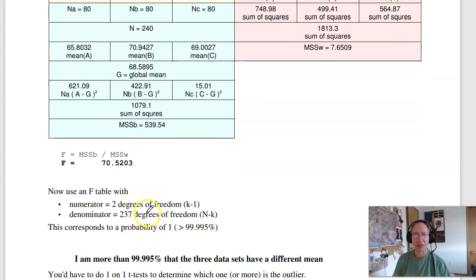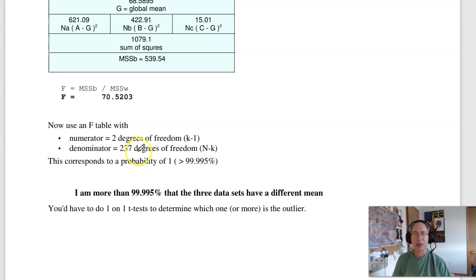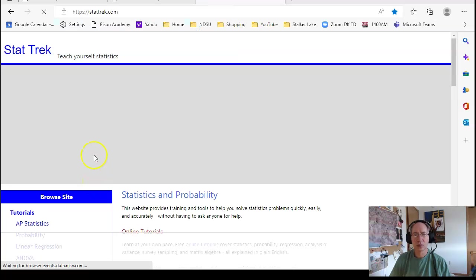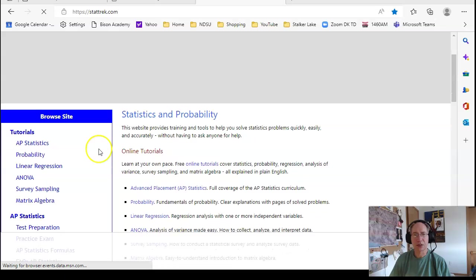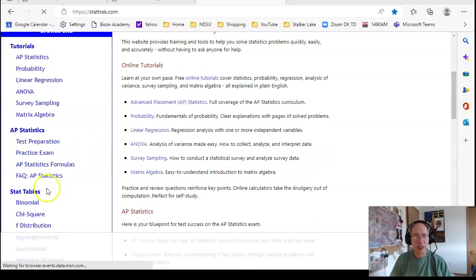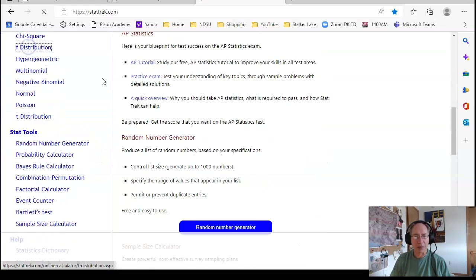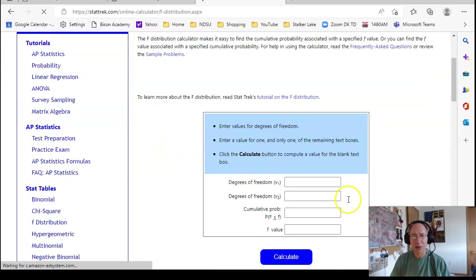Now I go to StatTrack. In StatTrack, I have two degrees of freedom in the numerator and 237 degrees of freedom in the denominator. Input the number 70.52. Go to StatTrack.com and scroll down until you find it. StatTrack has everything. I'll let it load—it slows down while I'm recording.